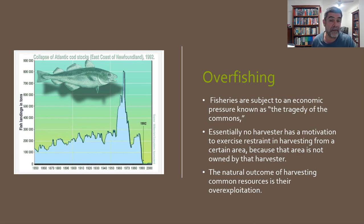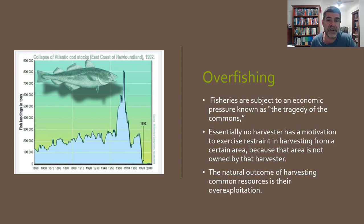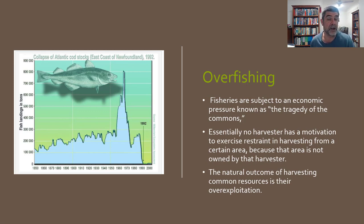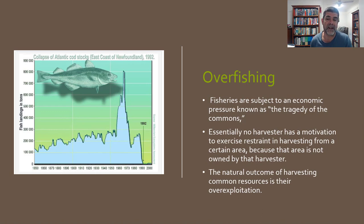What happens is I go out to my rock platform and fish, collecting the number I want, feeling like I'm not really affecting the numbers. Then a friend goes out in their boat and throws nets, catches a few fish, and then somebody else throws dynamite and collects a harvest. Before we know it, numbers of certain species are starting to drop. What's much more significant is that some commercial fishing organisations are taking very large numbers of fish, sometimes indiscriminately — collecting other species that are not the target species. Essentially, no harvester has a motivation to exercise restraint because the area is not owned.